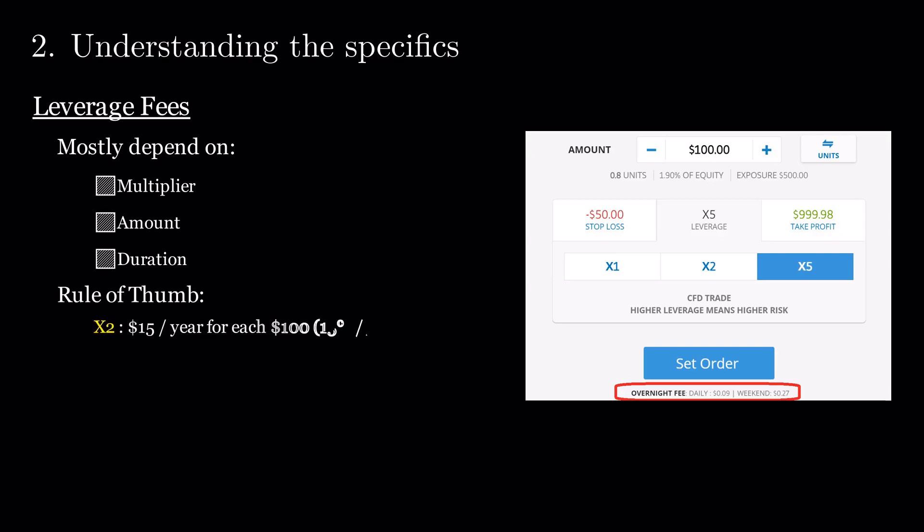for leverage 2, your costs are at around 15% per year, and for leverage 5, at around 40% per year. Keep in mind that this is a proxy, and for each trade, you should check your exact fees.